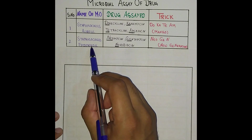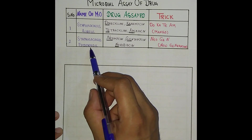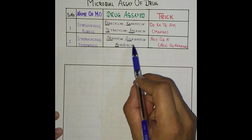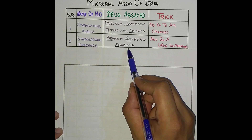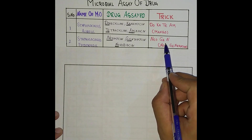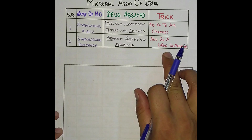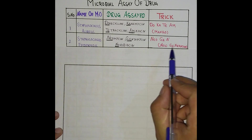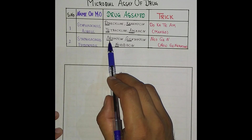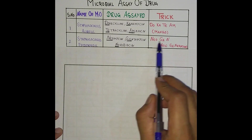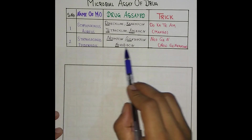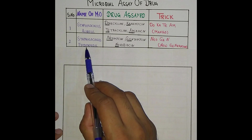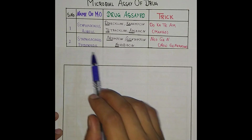The second one is Staphylococcus epidermidis, and the drugs are Neomycin, Gentamicin, and Novobiocin. The trick is 'New Generation': NEO for Neomycin, GE for Gentamicin, and N for Novobiocin — 'new generation' for Staphylococcus epidermidis.